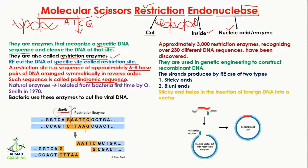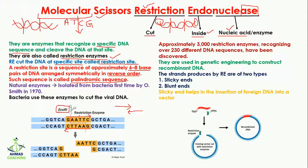For example, we have the restriction endonuclease EcoRI. This restriction enzyme cuts at a specific site known as the restriction site, which is a palindromic sequence. We said the palindromic sequence is six to eight bases long — you can see one, two, three, four, five, six. The sequence here is G-A-A-T-T-C. If you read it from this side or that side, you get the same sequence — that is a palindromic sequence.